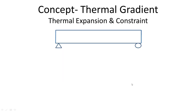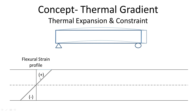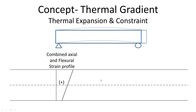A simply supported beam can bend and it can expand. The bending of the beam generates a flexural strain profile that is linear with respect to the depth of the beam. Expanding of the beam generates an axial strain profile that is generally constant with respect to depth. You can add these two profiles together, and the resulting profile is still linear.